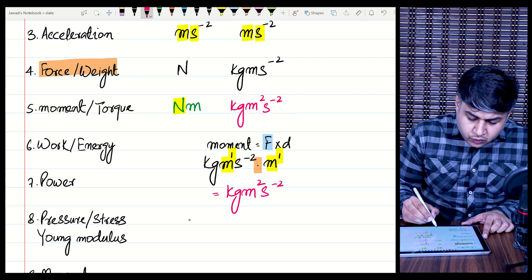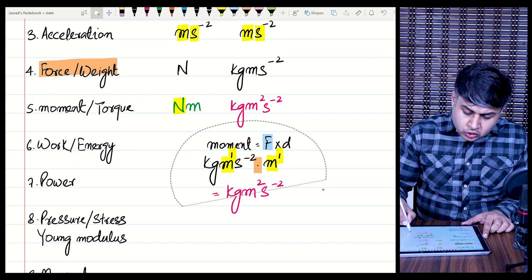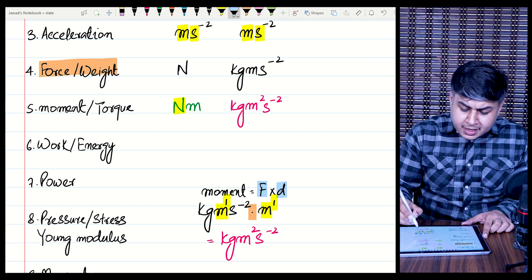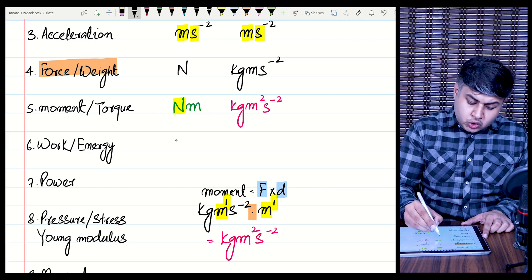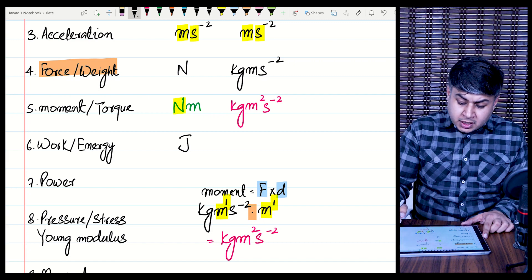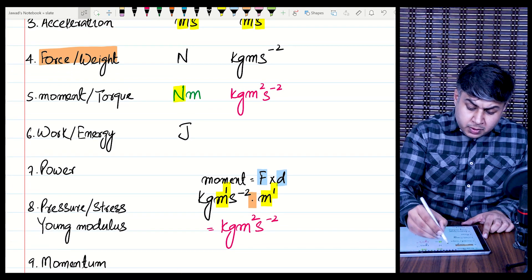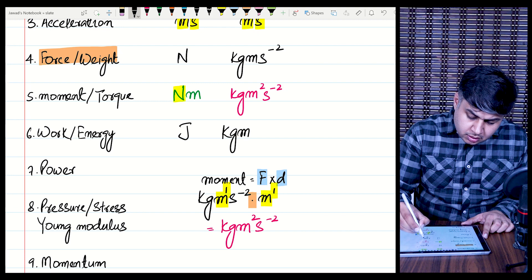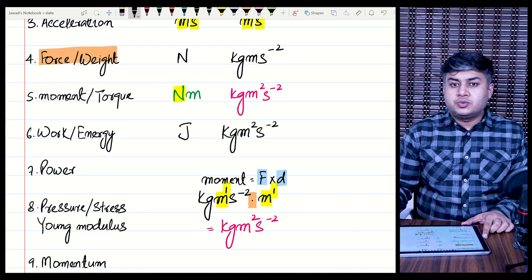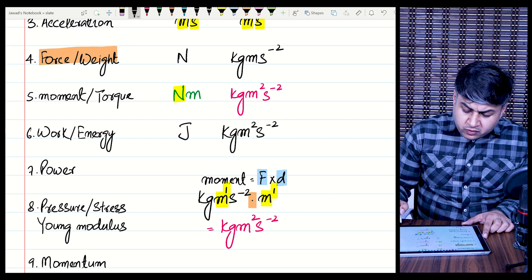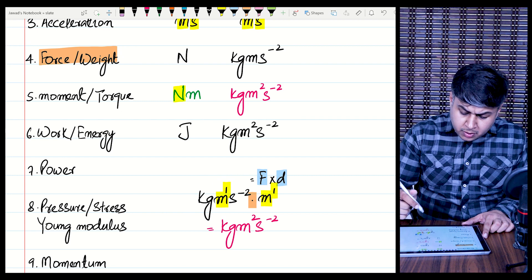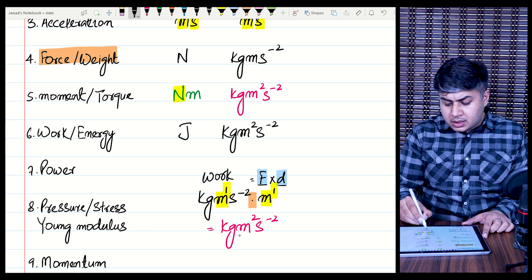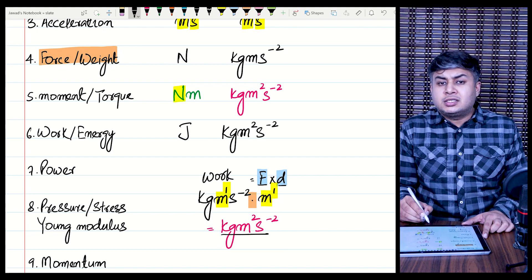The next physical quantities are work and energy. Work is the product of force and distance. The SI unit for work is Joules, but Joules is not the base unit. The base unit for work is the same as for moment — kg·m²·s⁻² — because work also equals force times distance, giving the same formula. Just replace moment with work and the base unit is kg·m²·s⁻².